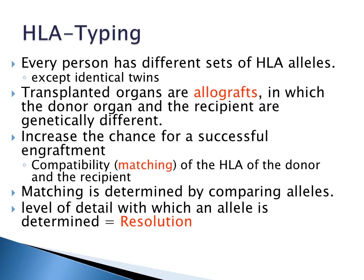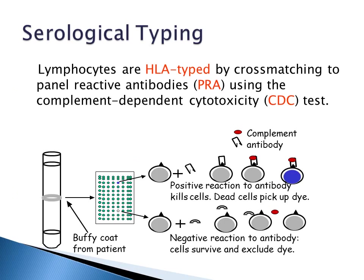Transplanted organs are allografts in which the donor organ and the recipient are genetically different. Compatibility or matching of the HLA of the donor and the recipient increases the chance for a successful engraftment. Matching is determined by comparing alleles, and resolution is the level of detail with which an allele is determined. Matching can be done through serological typing where lymphocytes are HLA typed by cross matching to panel reactive antibodies using the complement dependent cytotoxicity test.